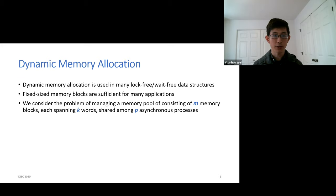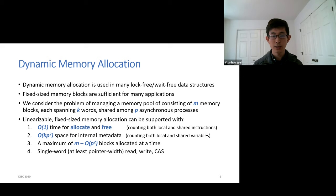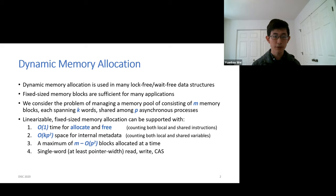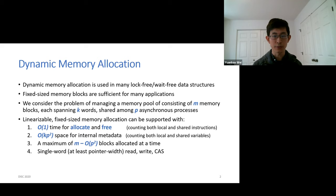Some data structures require variable-sized memory blocks, but many are built on fixed-size blocks—that's the problem we focused on. Our main contribution is a linearizable allocate and free operation: a linearizable implementation of an allocate-free set where both operations take constant time, use O(K) time, and have K times P-squared space overhead. Here K is the size of the memory blocks and P is the number of asynchronous processes. This overhead means we can allocate all but P-squared of the memory blocks being managed, and our allocator uses at most K times P-squared space for internal metadata. Our implementation uses only single-word pointer-width read, write, and compare-and-swap.